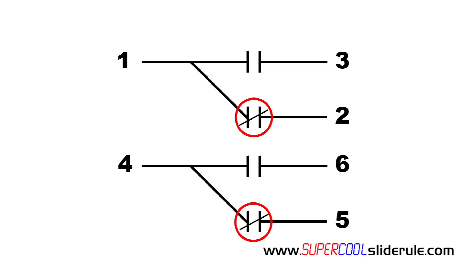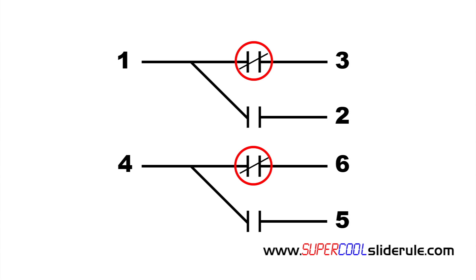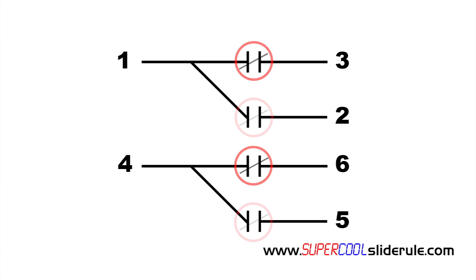Once you supply low voltage to the coil, these two contacts lose continuity with terminals 1 and 4 respectively, and these two should now have continuity with terminals 1 and 4. Once the low voltage is interrupted, the contacts should return to the normal position.